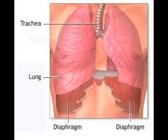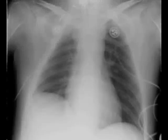The diaphragm is a parachute-shaped muscle that separates the chest cavity from the abdomen, and it serves as the main muscle of respiration. This is a sample X-ray of a right elevated hemidiaphragm.